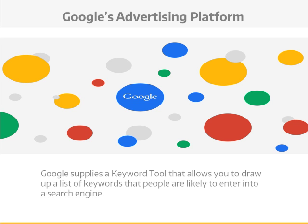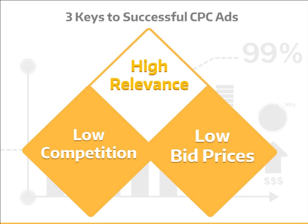Both are targeted mainly by keywords. Google supplies a keyword tool that allows you to draw up a list of keywords that people are likely to enter into a search engine, or which appear as content on a web page, and which are relevant to your offer. Your challenge will be to find those keywords in the sweet spot between high relevance, low competition, and low pricing. That often means jumping on the long tail of the keyword list. Unless you have a large budget, you'll probably want to skip the most obvious keyword phrases and opt for unusual search phrases that will bring you traffic without costing $5 or $10 or more per click.